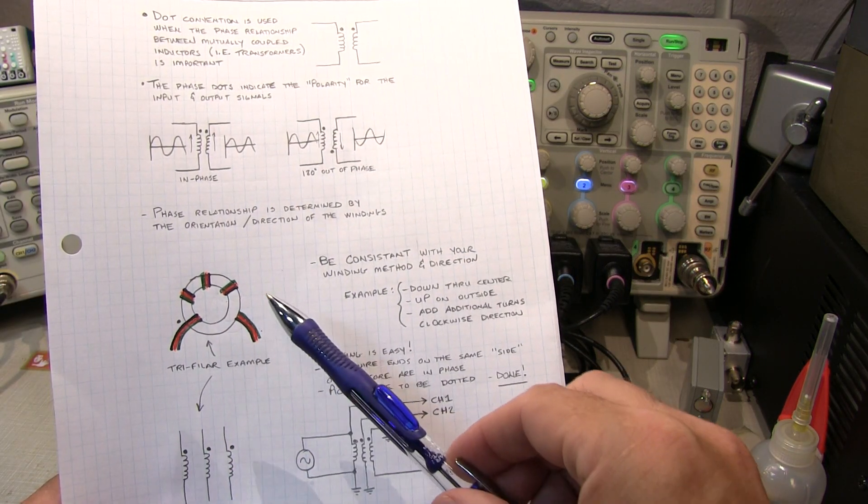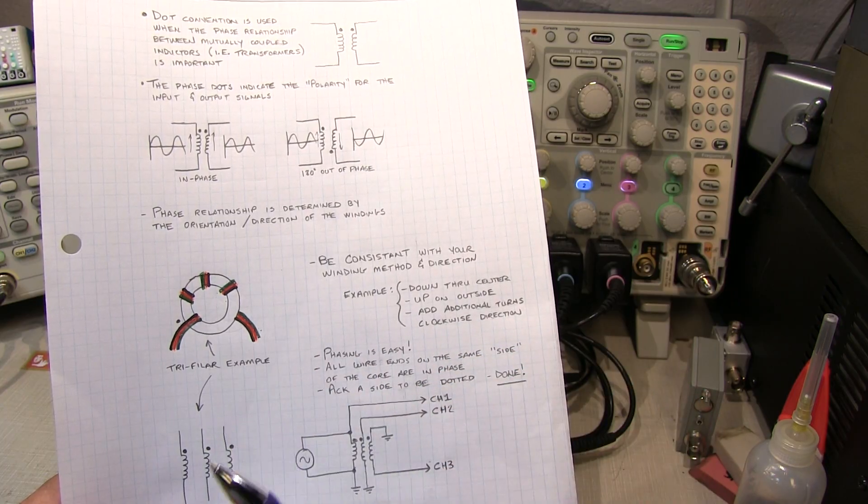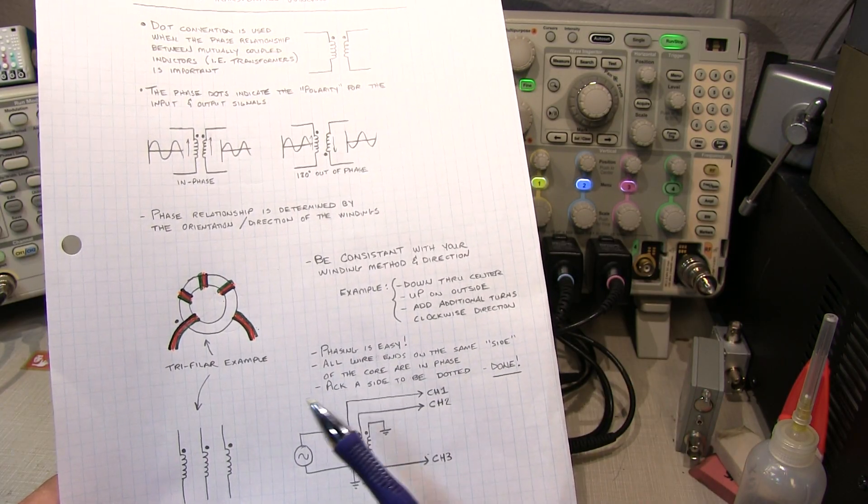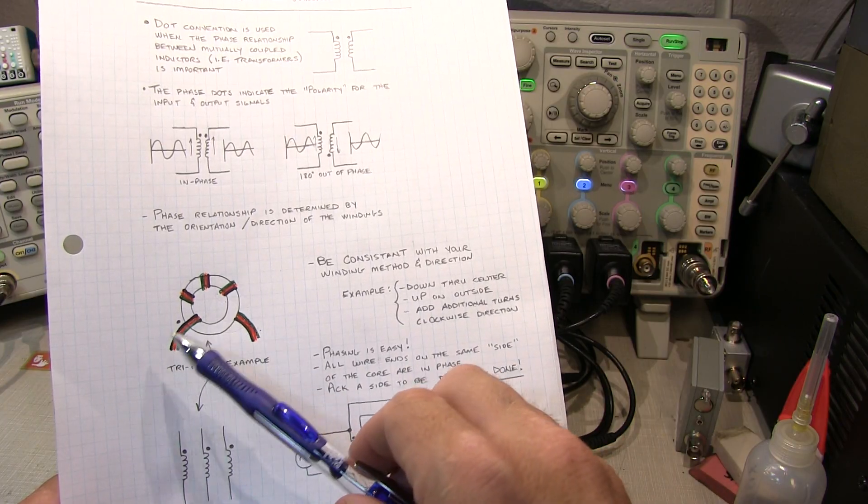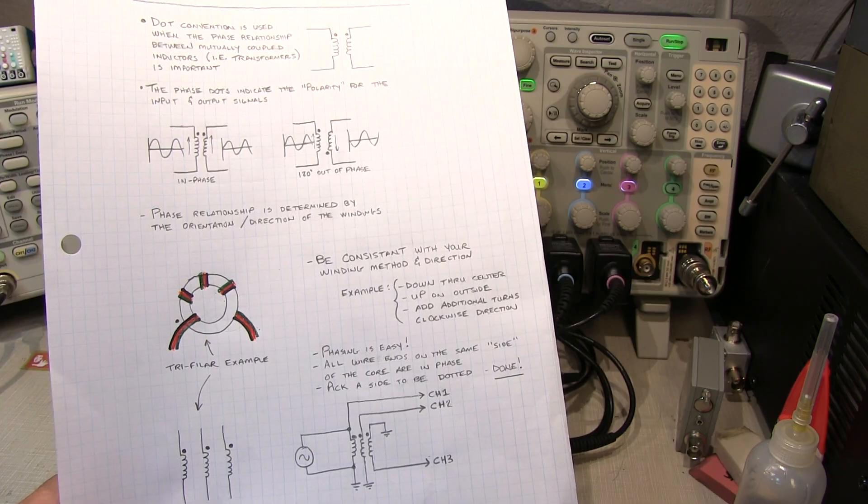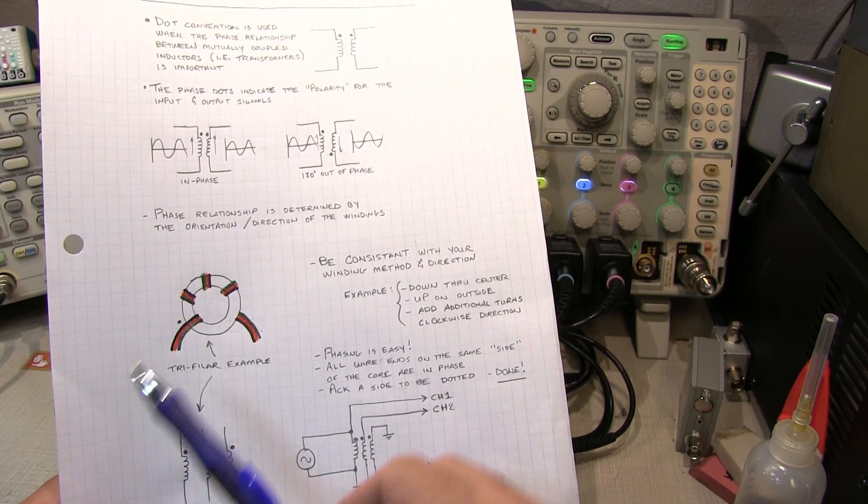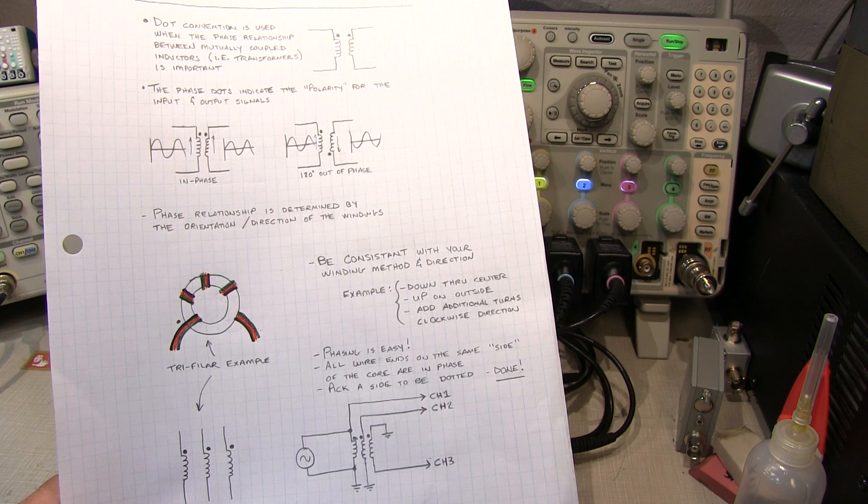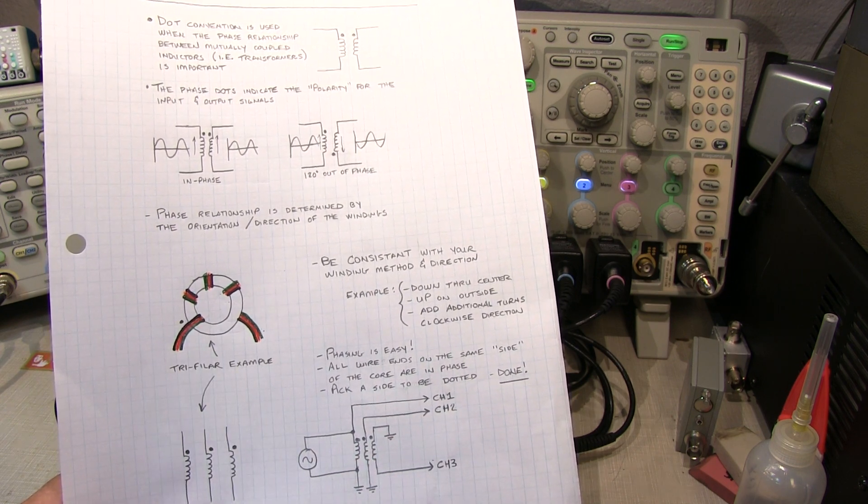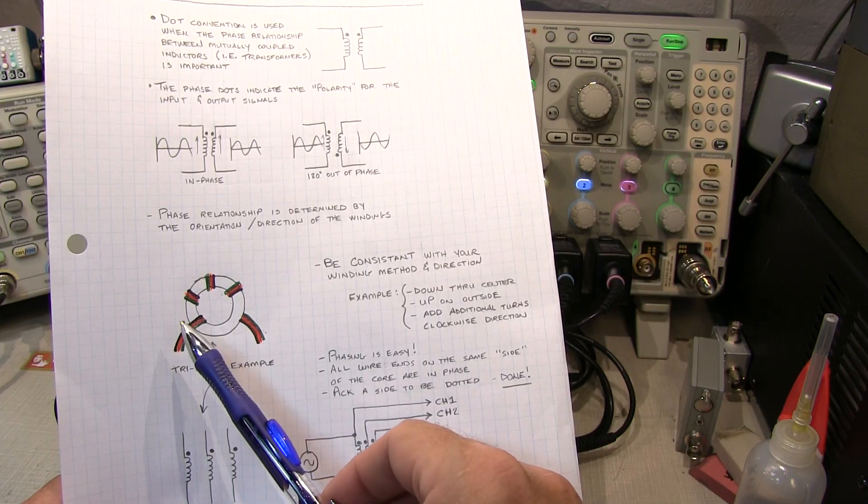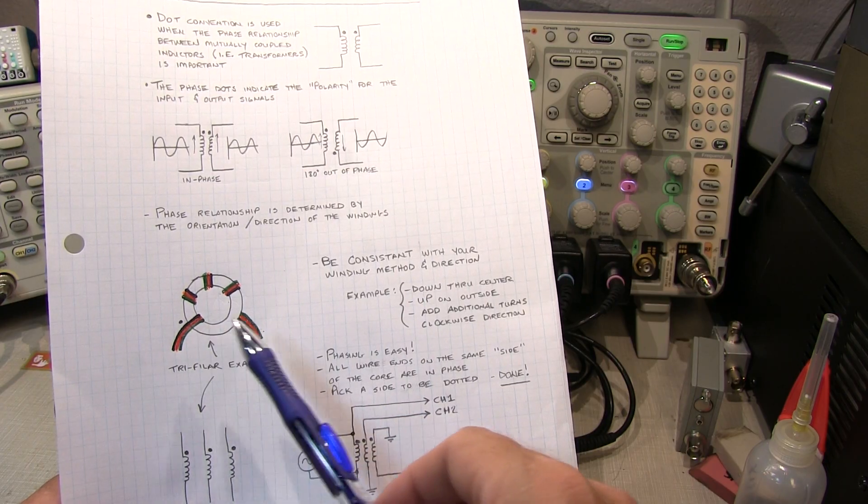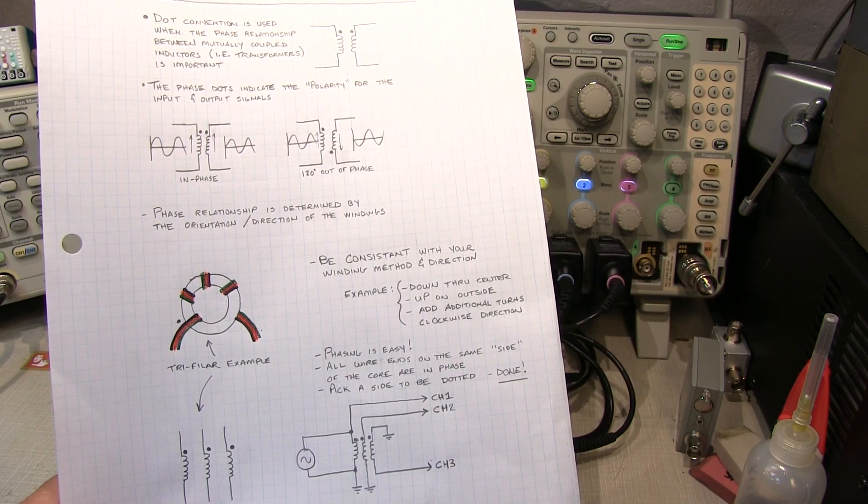So being consistent in your winding technique when you're putting the transformer together really just helps the phasing to take care of itself. All the wires on the same side of the toroid are going to be of the same phase. The only other real trick is to keep track of which wire is which. And you can do that a number of ways. You can use different color wires like I've drawn here. You can put different colored paint or dots or nail polish on the wires and ohm them out once you've finished putting it together.